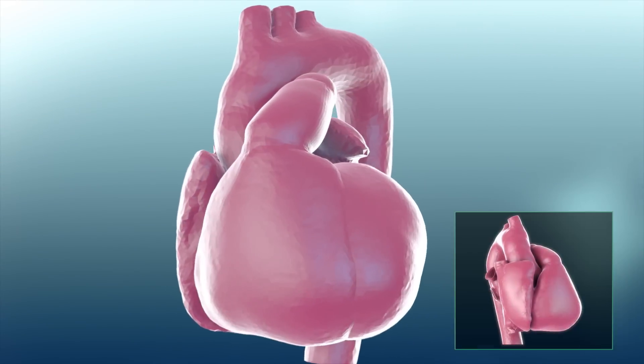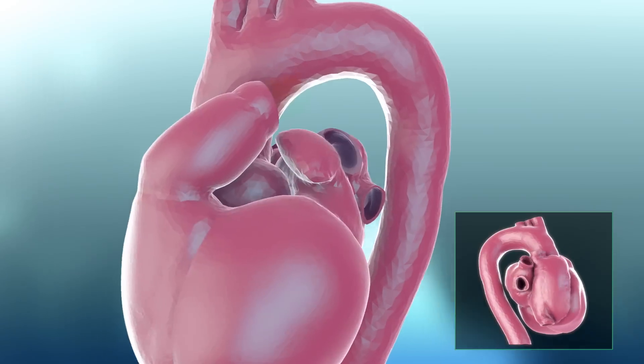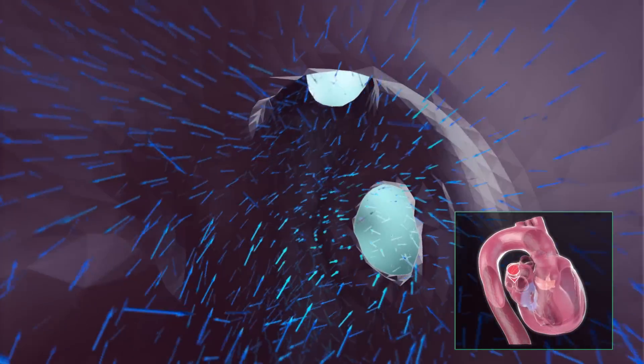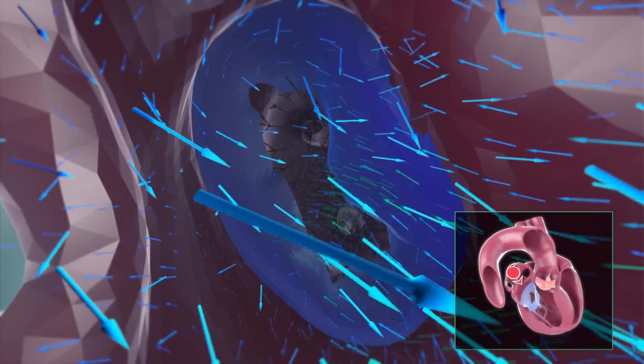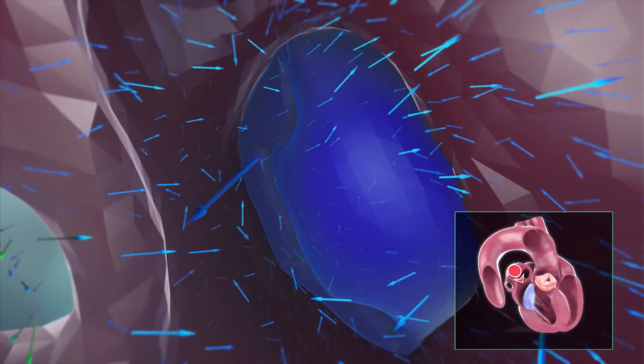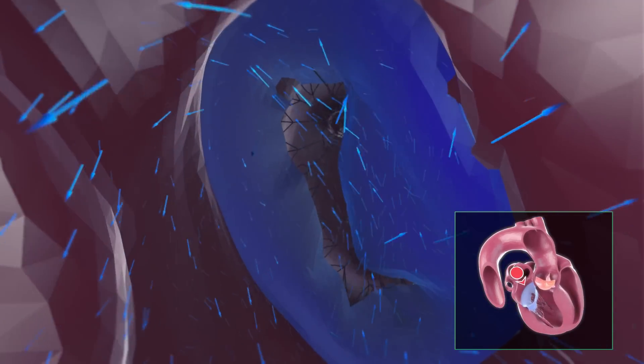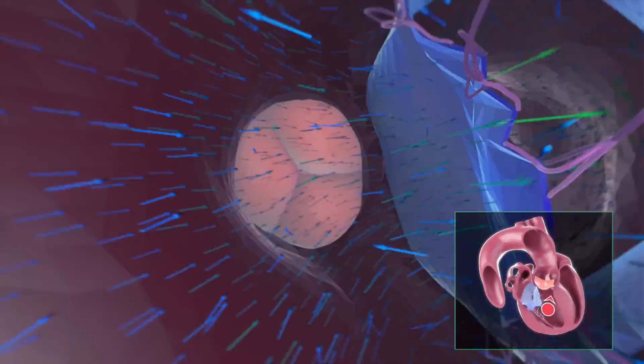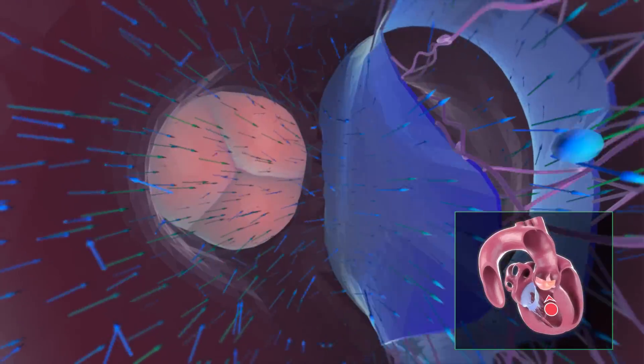Blood receives oxygen from the lungs, flows through the pulmonary vein to the heart and into the left atrium. What you are seeing now is the mitral valve. Behind this valve is the left ventricle. And here, the blood flow turns 180 degrees towards the aortic valve.